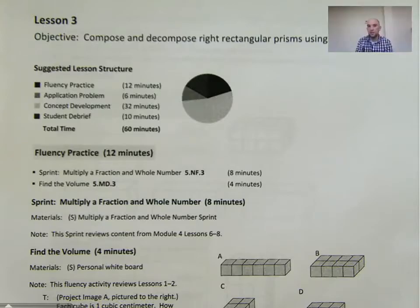Hello everyone, it's Mr. Kissinger at the Citizenship Academy in Syracuse, New York, and this is 5th grade math, module 5, lesson 3.